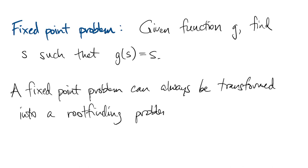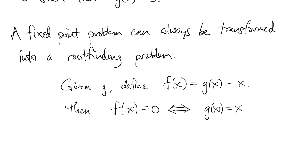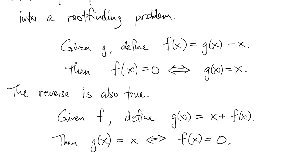If you're given a g that you want to find the fixed point of, you can define a function f as g minus x. Then whenever f is equal to zero, that's the same thing as g having a fixed point. The converse is also true. If you're given f and you want to find the root of that, you can define g as x plus f of x, and then a fixed point of g is the same thing as a root of f. So the two problems are essentially equivalent.